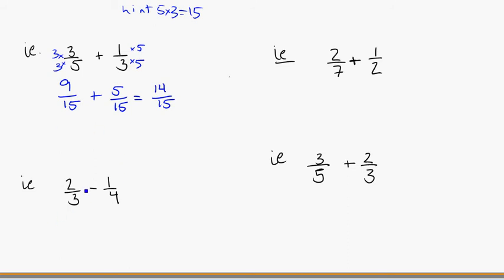Going through the same process on this one. 2 thirds minus 1 fourth. Okay, so 3 thirds and fourths are hard to make the same size. I can't just double or half anything. So I'm going to think about, what could I times each side by to get a similar bottom? And again, if you're not sure, try the hint. Times the two together, 3 times 4 gets me to 12.